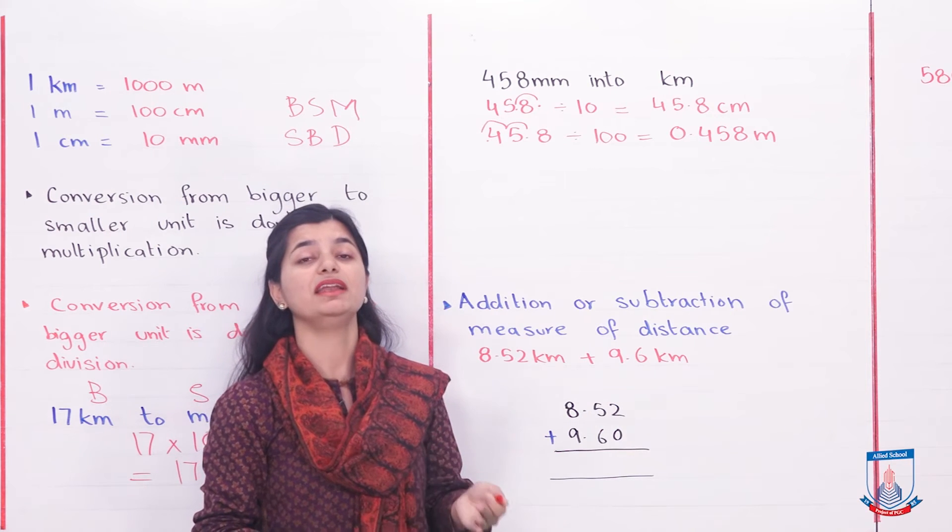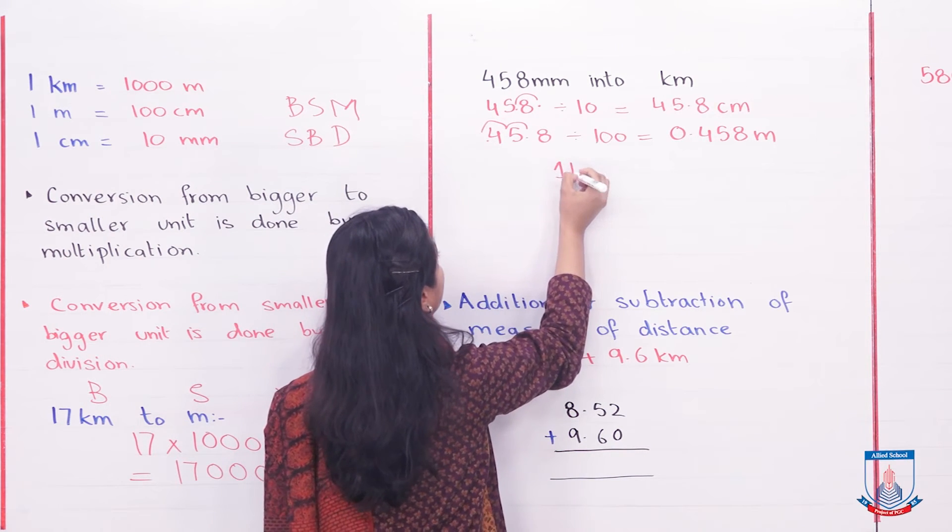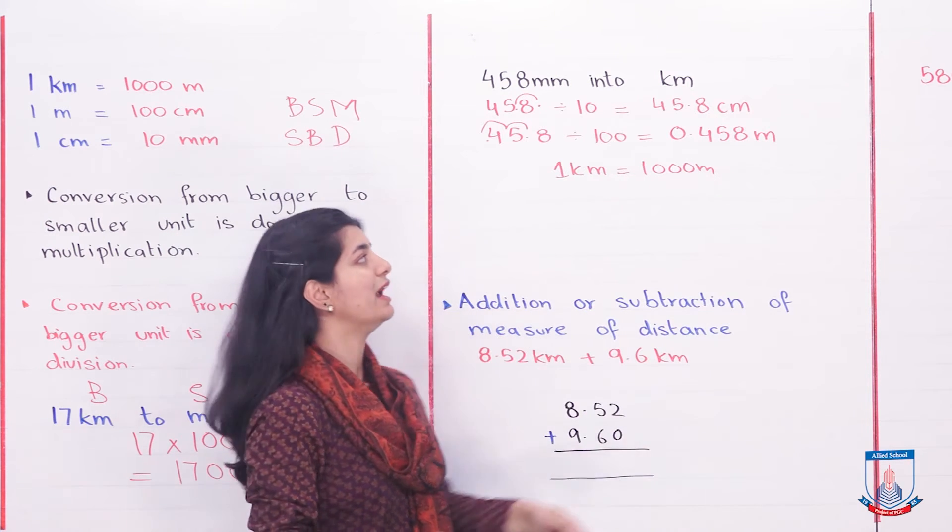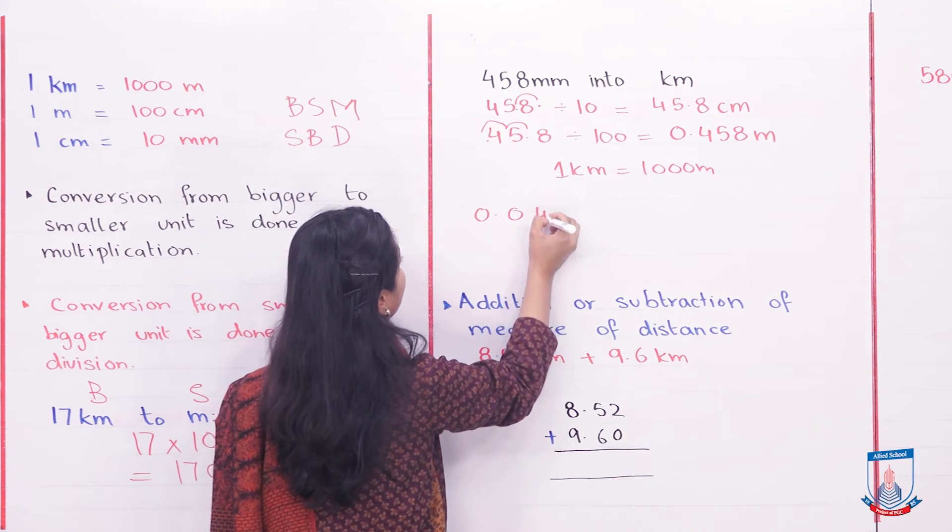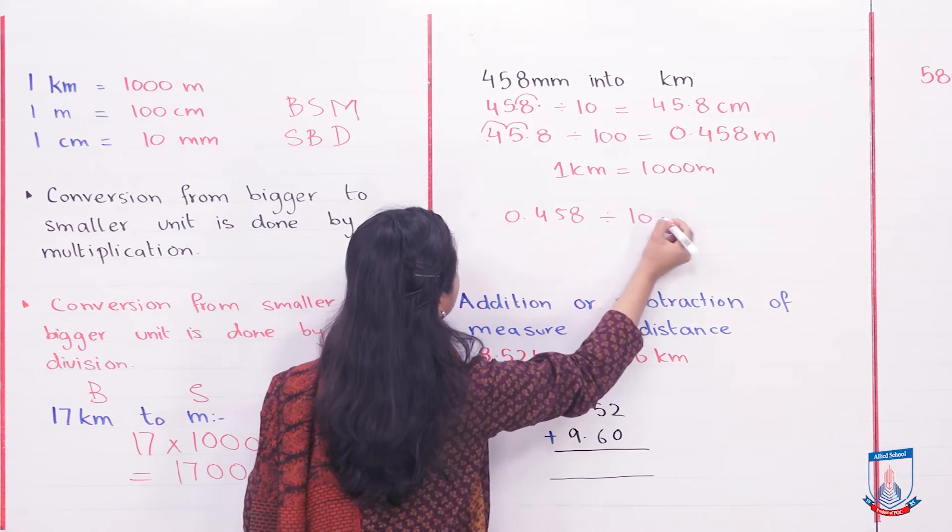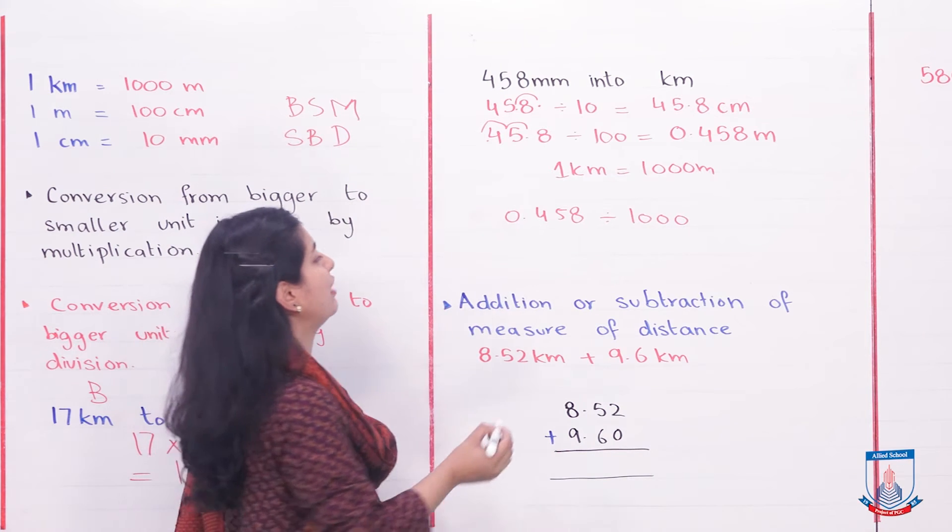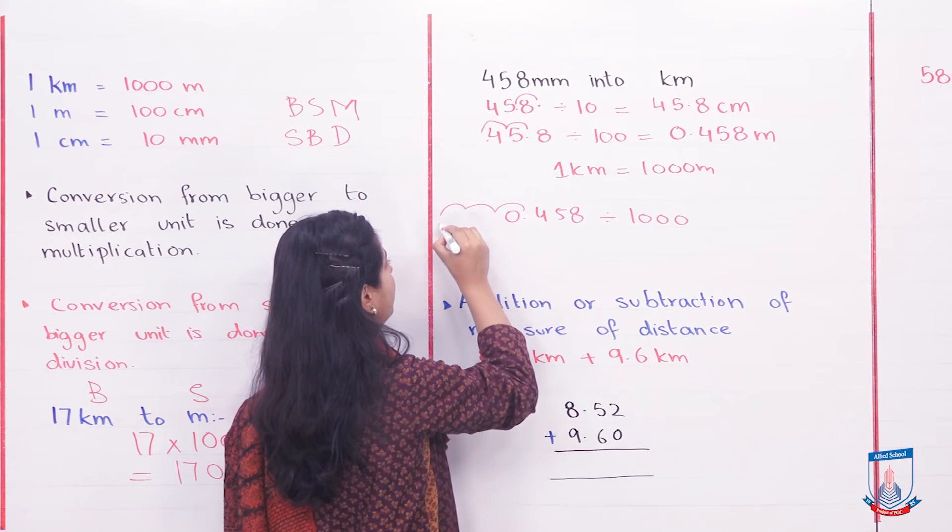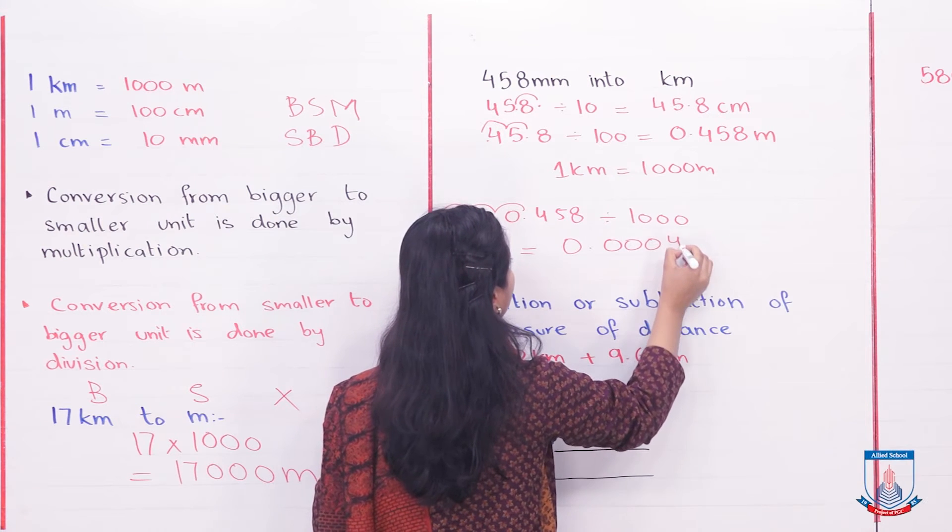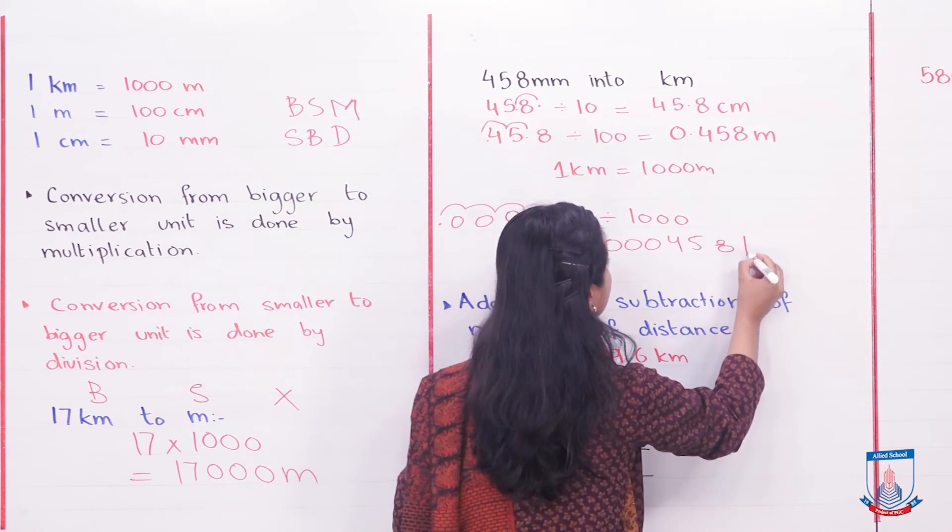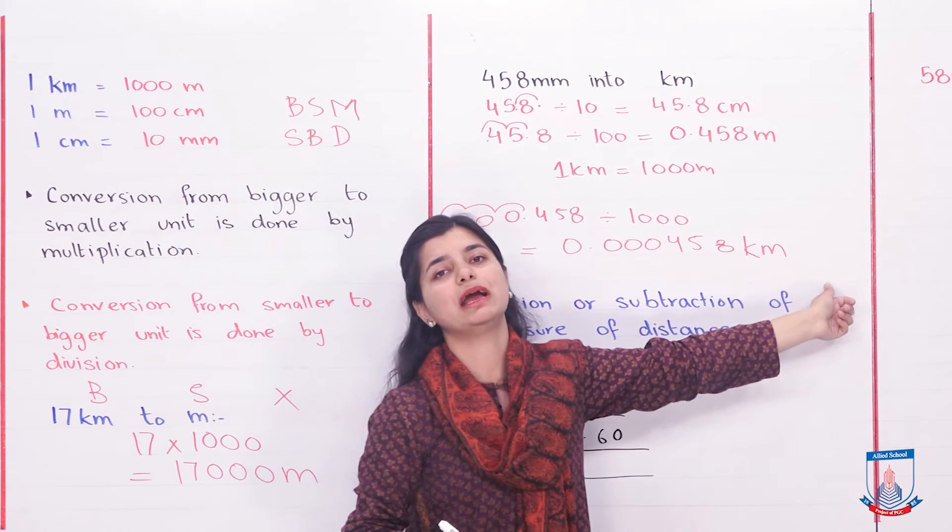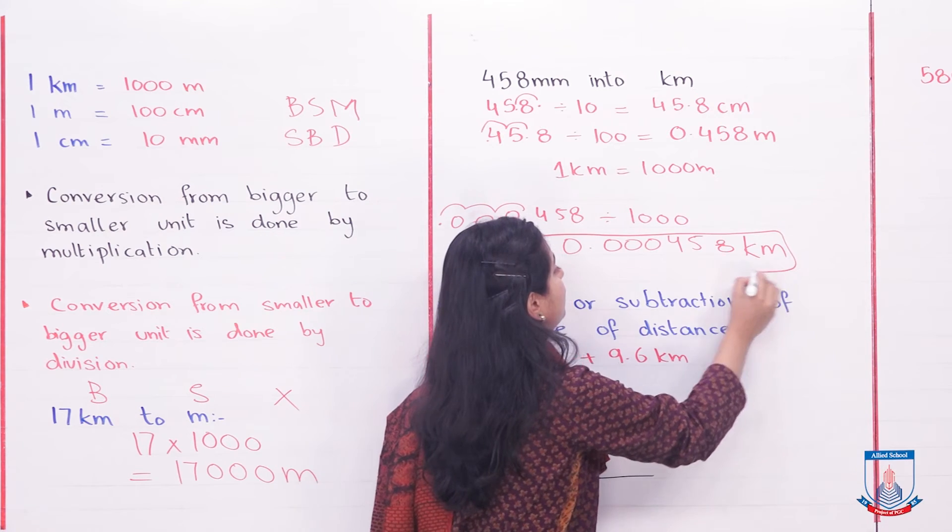Now we need to finally convert to kilometers. 1 kilometer is 1,000 meters. So the meters value, small to big divide, we need to divide by 1,000. So 0.458 divided by 1,000. Again, we move the decimal 3 times to the left - 1, 2, and 3. We paste two zeros in between and our answer would be 0.000458 kilometers. So you have converted your answer to kilometers. 458 millimeters becomes this amount in kilometers by converting through all the processes of different units.